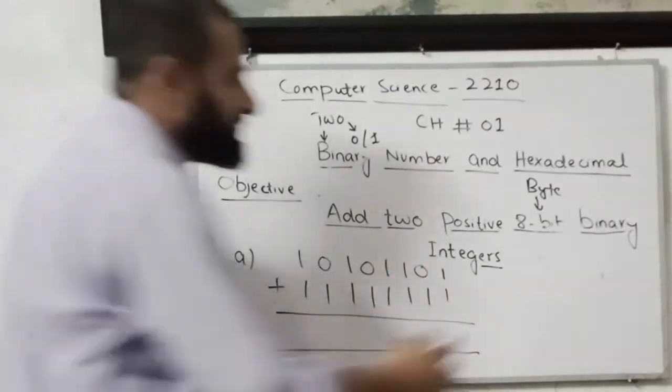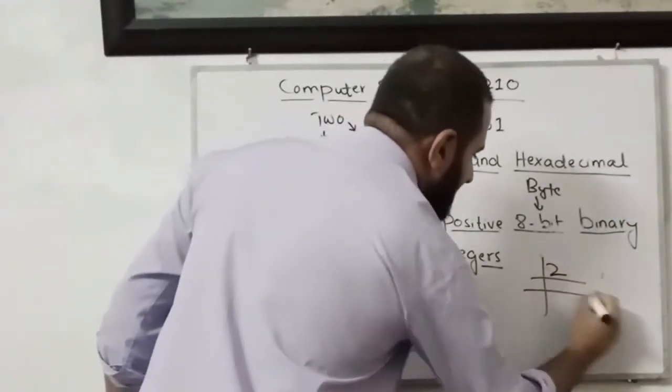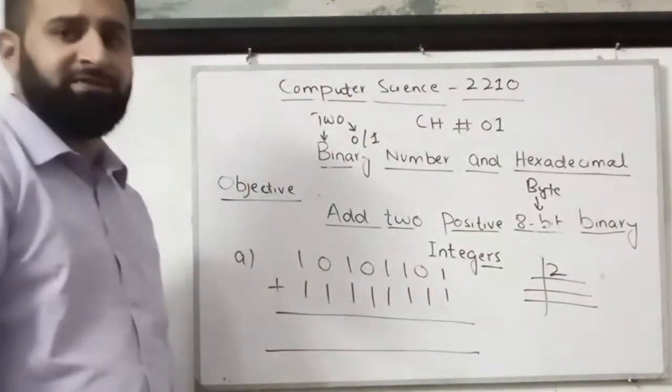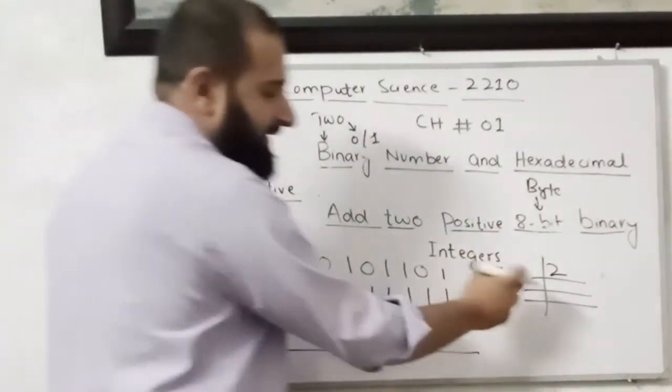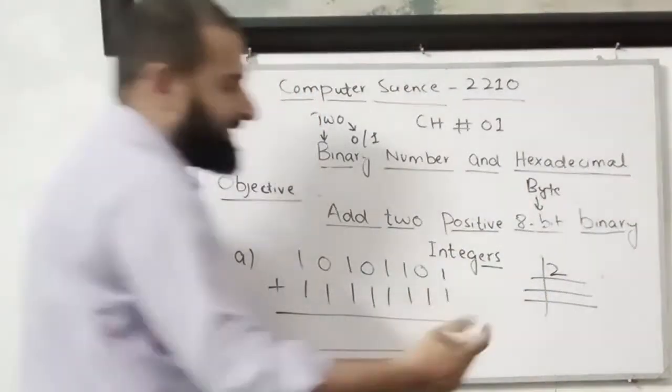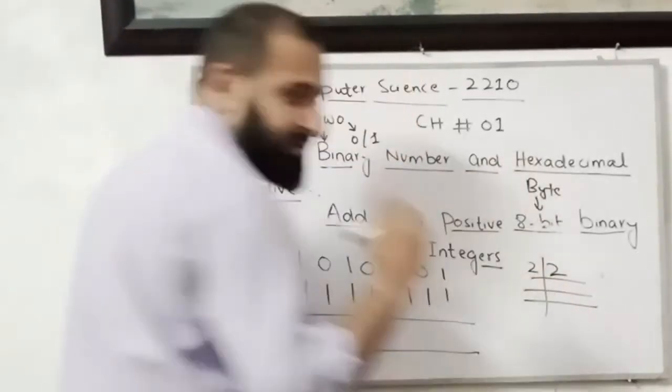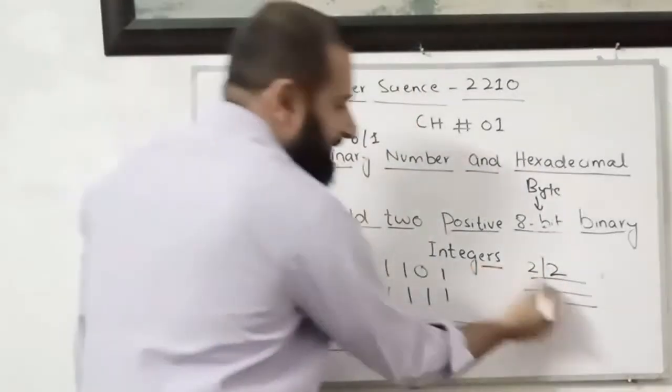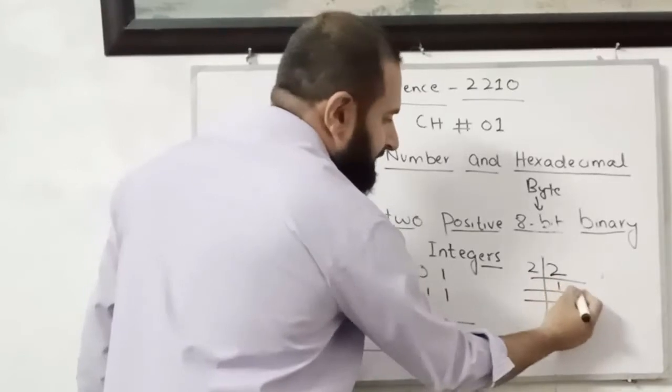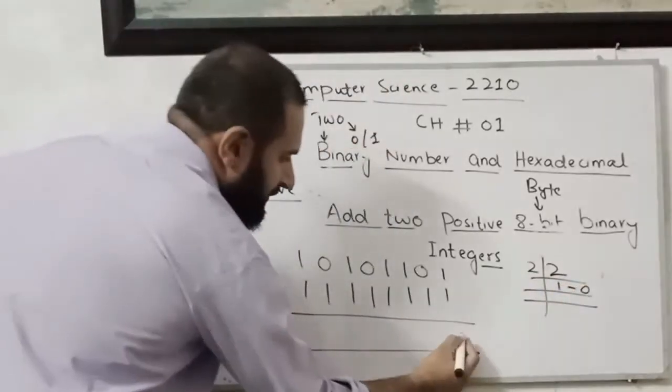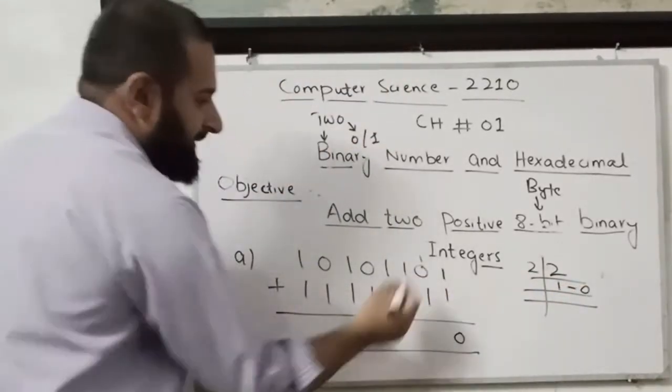1 plus 1 means 2. So I need to put 2 over here. First of all, using the successive division I will convert this into binary number. I will divide this with 2. So 2 divided by 2 is 1. Remainder is 0. 0 will go over here and 1 will go over here as a carry.